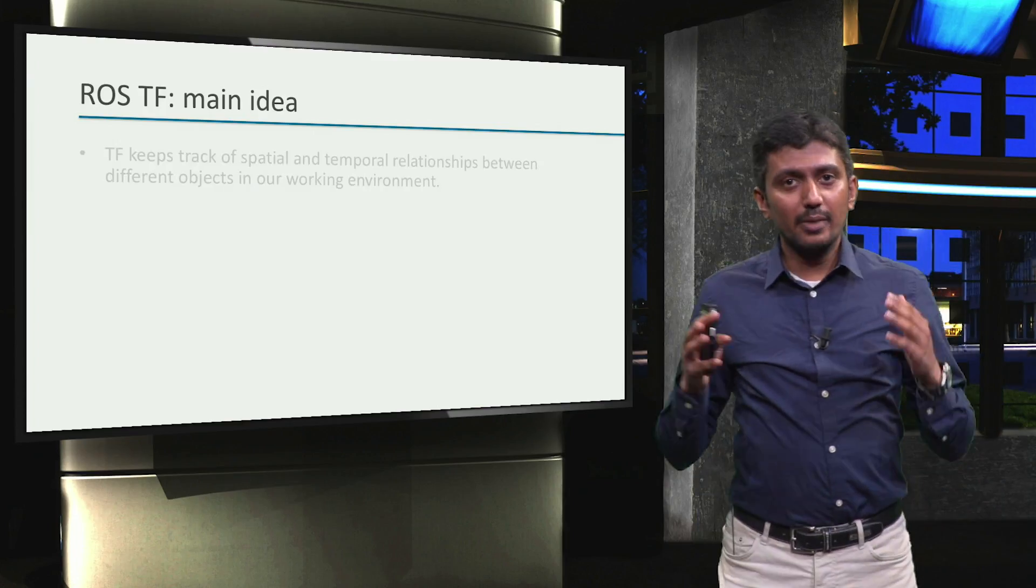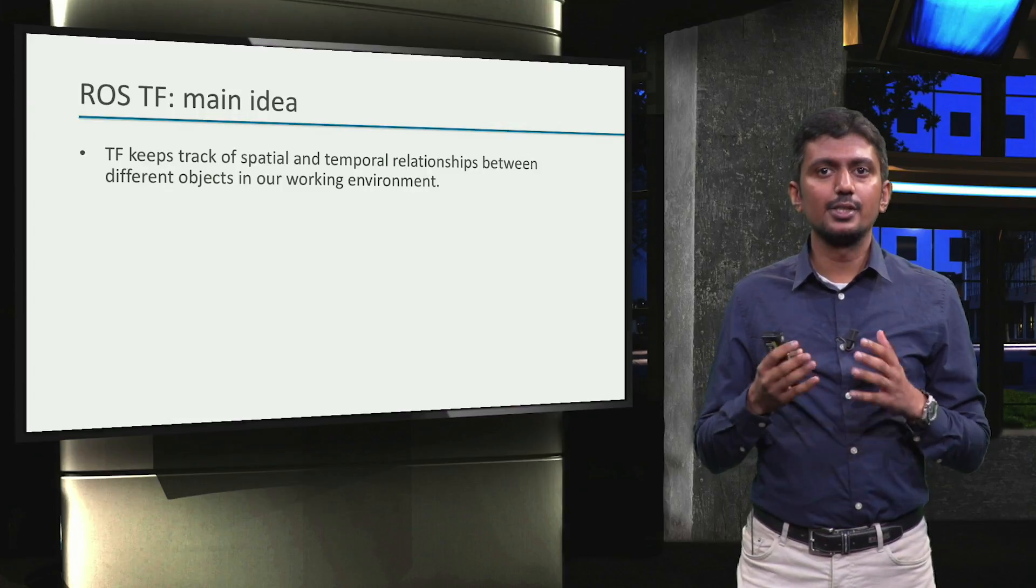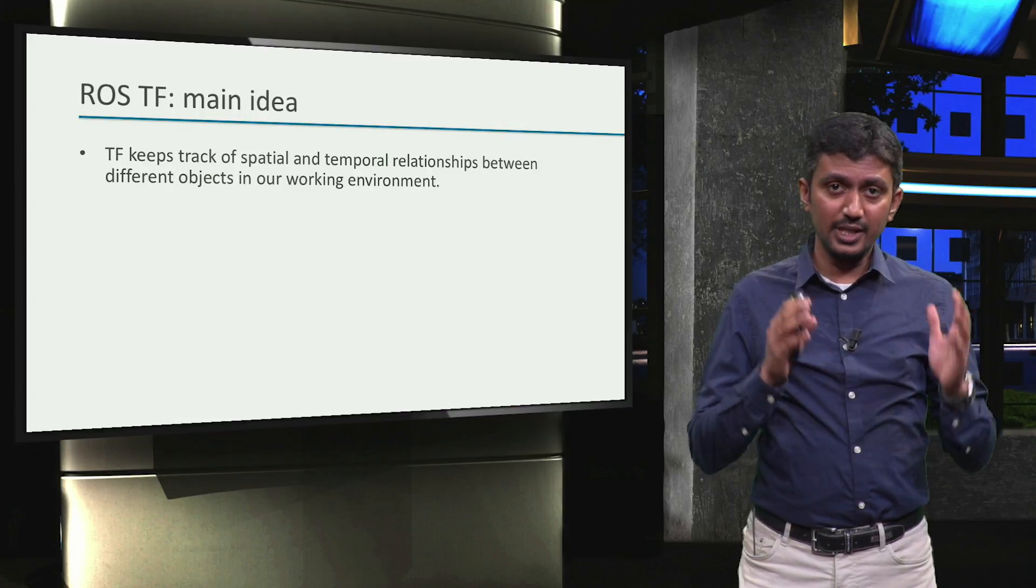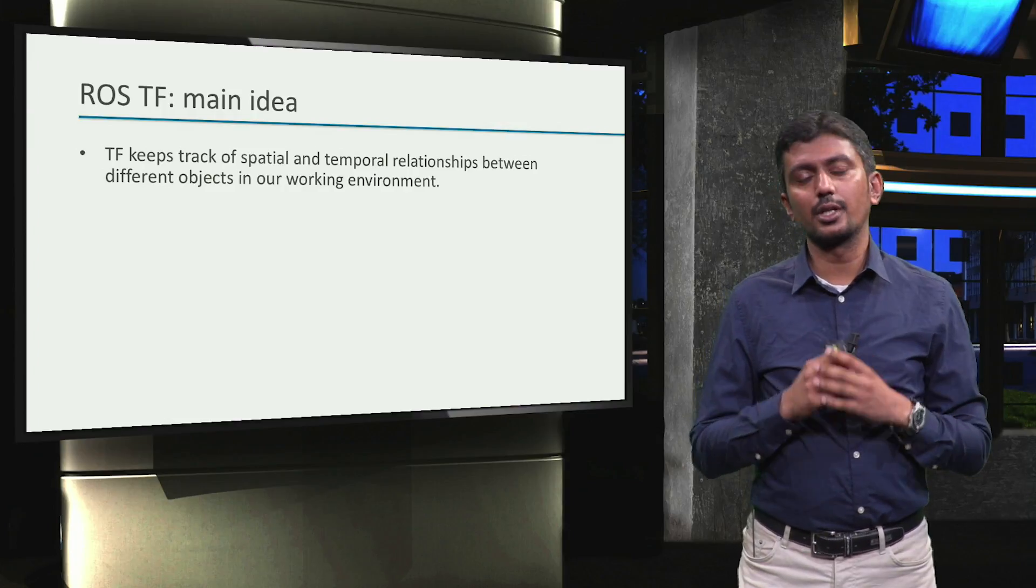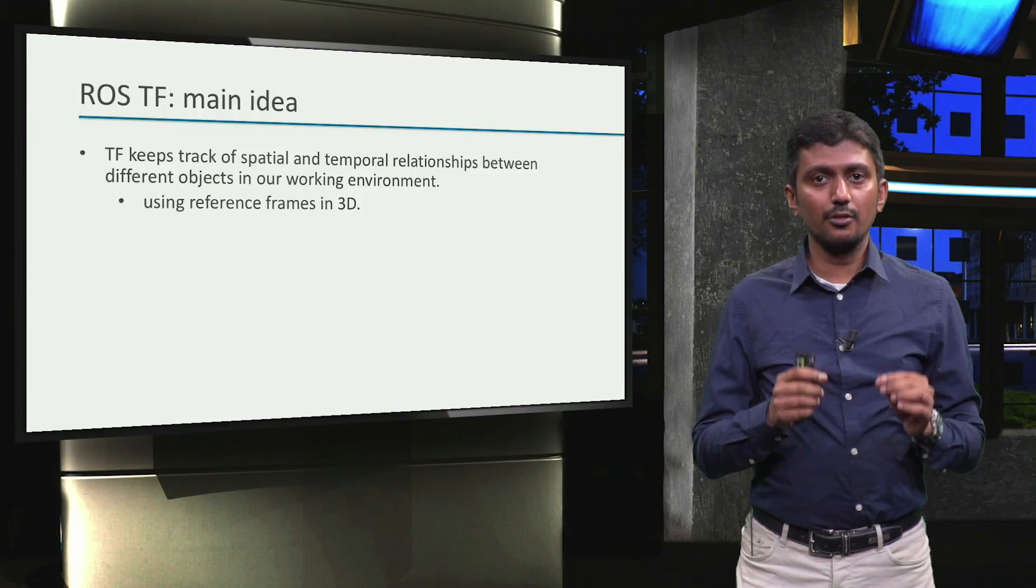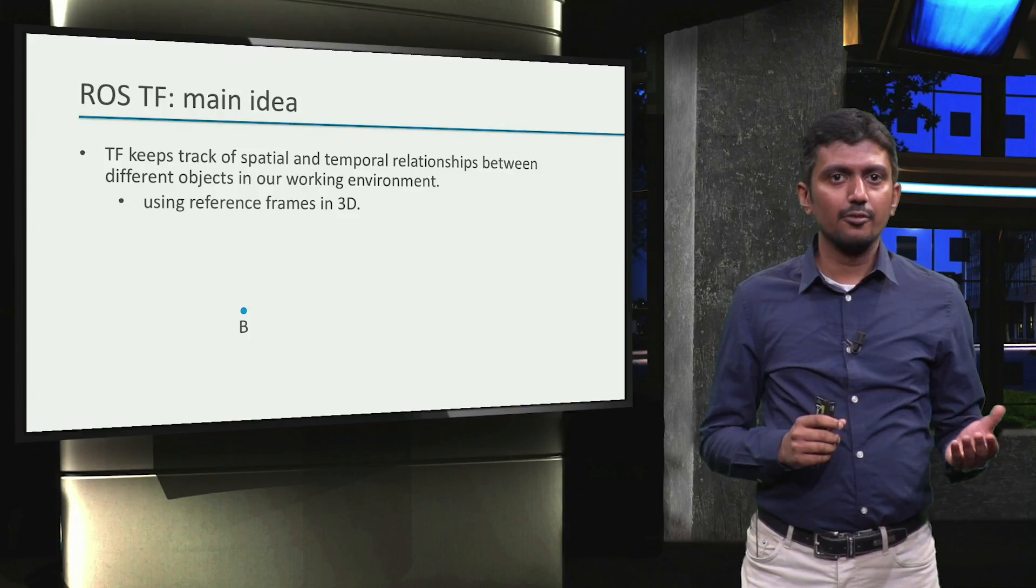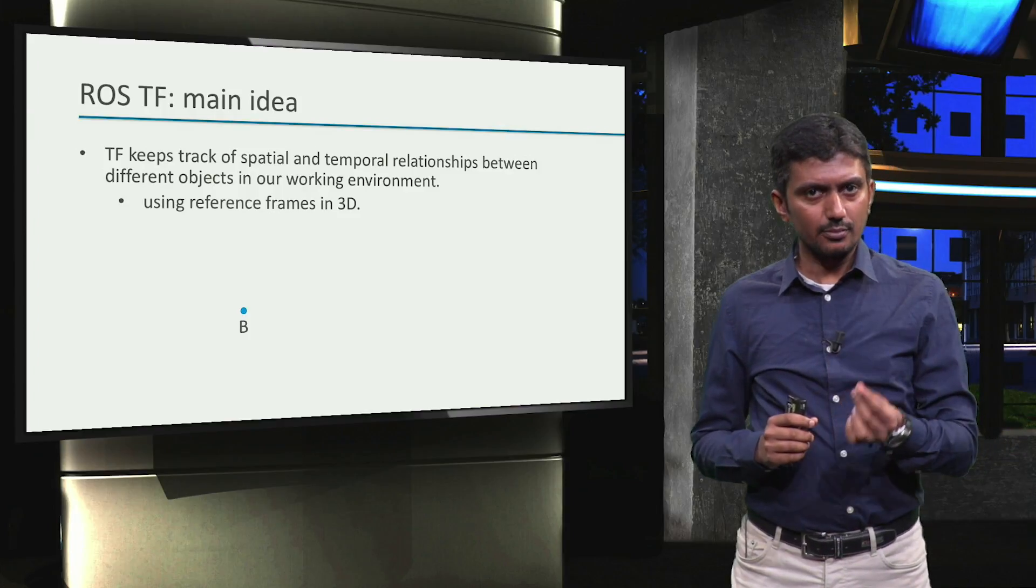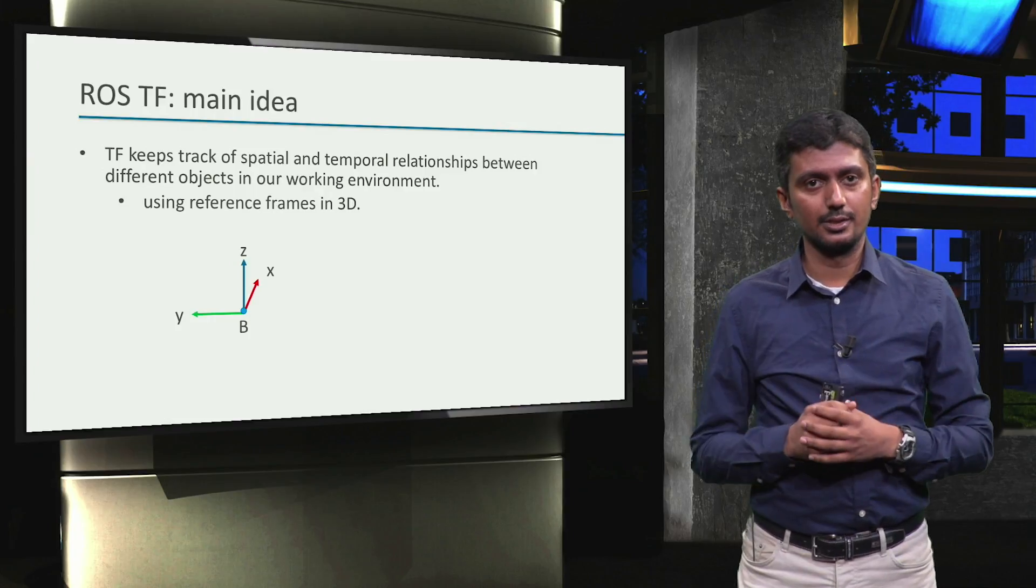The main idea behind ROS TF is that TF is used to keep track of spatial and temporal relationships between different objects in our environment. This is achieved using the concept of reference frames in 3D. For example, if we take a point B, then a possible 3D reference frame for this point can be something like this.